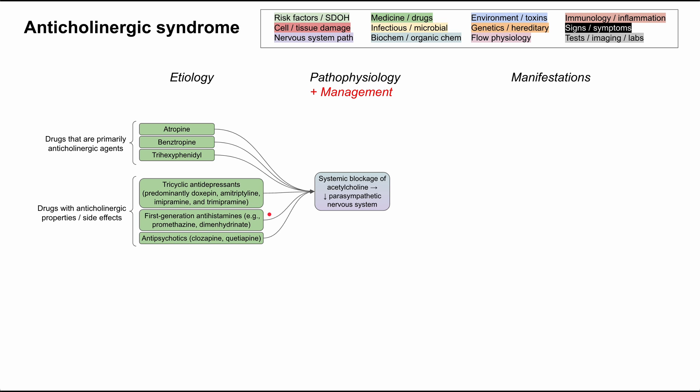Next, there are antihistamines — predominantly the first-generation antihistamines — including diphenhydramine (Benadryl), promethazine, and dimenhydrinate. Some antipsychotics as well, like clozapine and quetiapine, also have anticholinergic side effects.